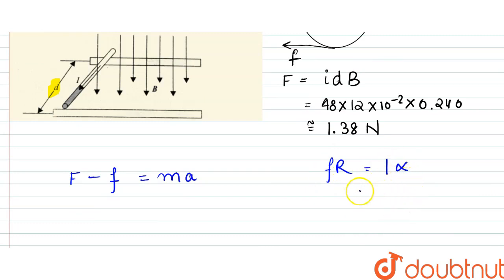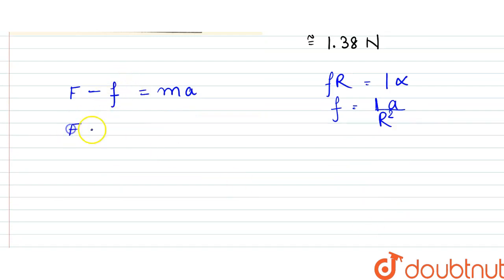Since it is pure rolling, α = a/r, so frictional force f = Ia/r². We can substitute this value in the equation: F = Ia/r² + ma.